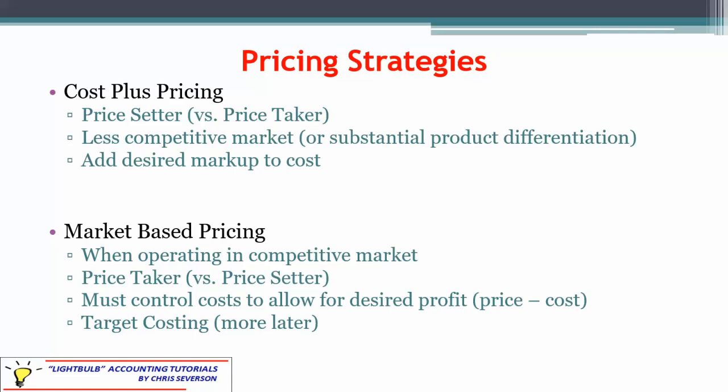Market-based pricing, on the other hand, is used when you're in a competitive market. You have to take the price that the market gives you; you don't have the ability to set prices on your own — if you don't match the price of everybody else, you're going to lose out on customers. This is where we're talking about target costing. You take whatever price the market gives you, subtract out your desired profit, and that backs you into what's known as a target cost that you have to hit to achieve the profit you want.